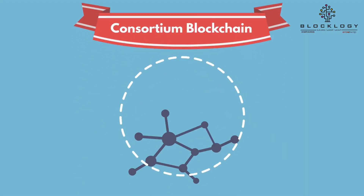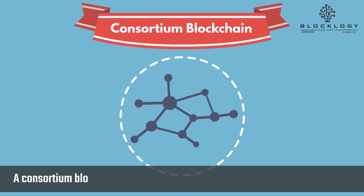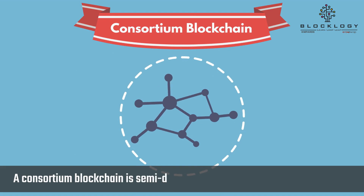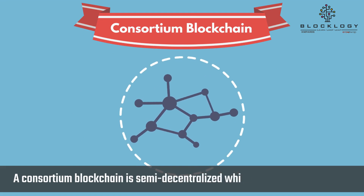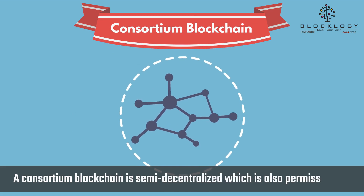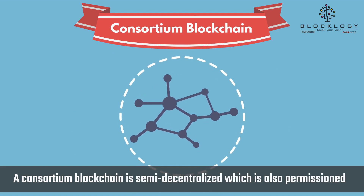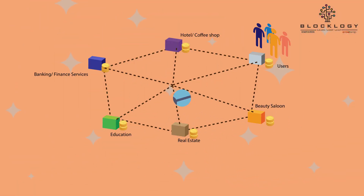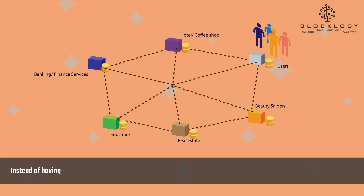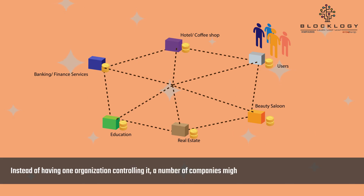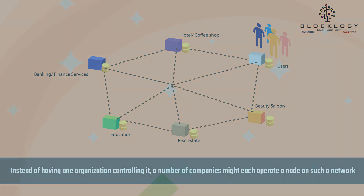Consortium blockchain: a consortium blockchain is semi-decentralized, which is also permissioned. However, instead of having one organization controlling it, a number of companies might each operate a node on such a network.